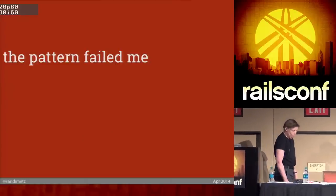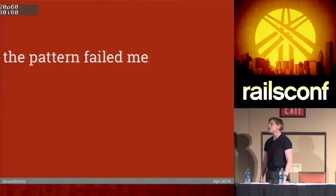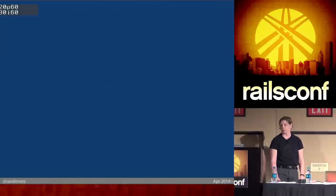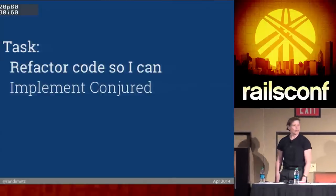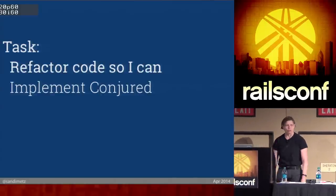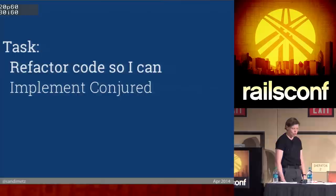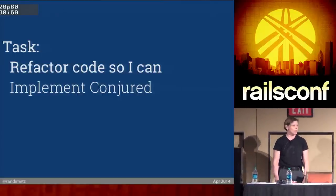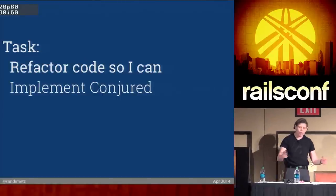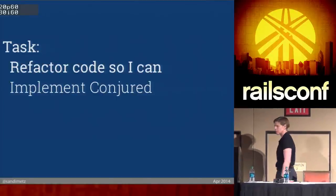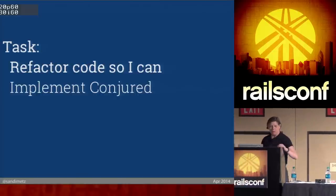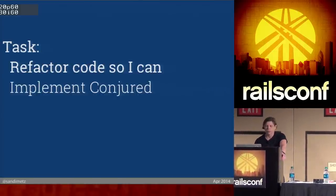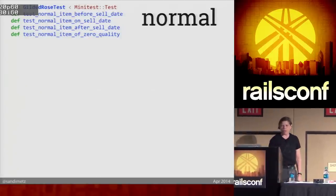I could not follow the pattern — I was not good enough to follow the pattern. And so I decided I was going to make a new pattern, that I was going to refactor this code. This is real refactoring according to the definition: I'm going to change its arrangement without altering its behavior. I'm not going to try to add conjured; I'm going to try to move this code around so that I can add conjured. For refactoring like this, tests through the wall at your back — you've got to have tests or you don't know what you're doing.